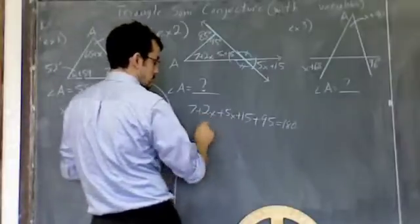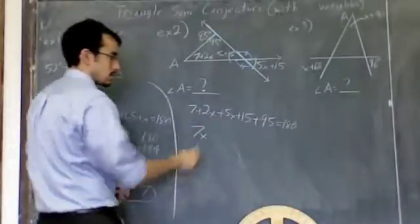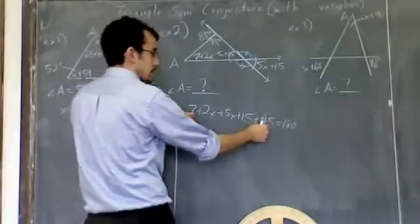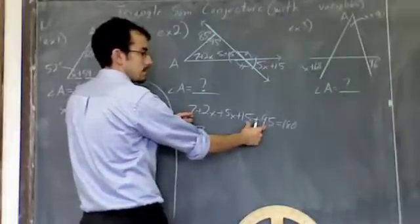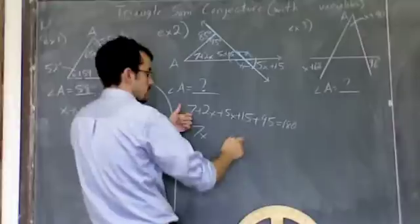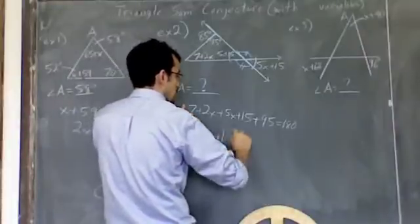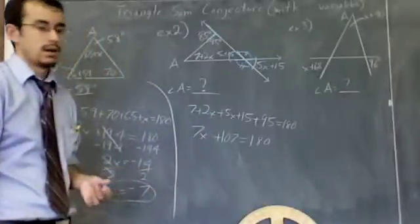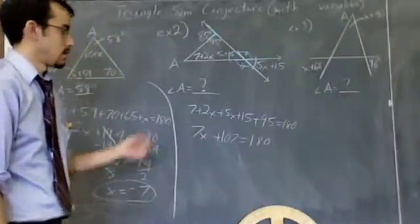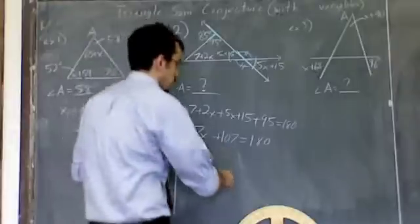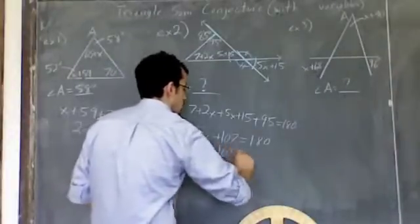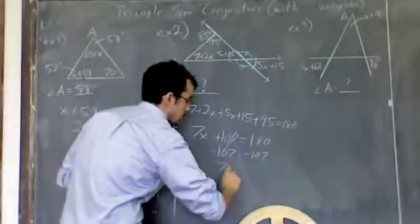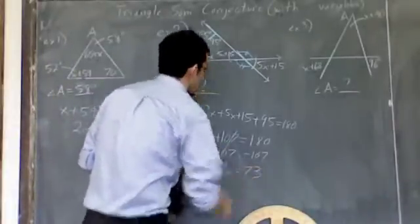2x plus 5x is 7x. Those are all my x terms. Then all my non-x terms: positive 7, positive 15, positive 95. 15 and 95 is 110. 110 plus 7 is 107. So that equals 180. And then I just have two steps left. Subtract the 107, canceling those. Now you get 7x equals 73.